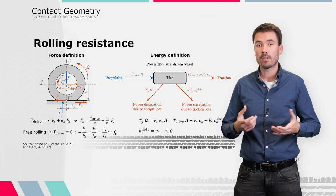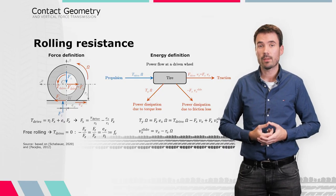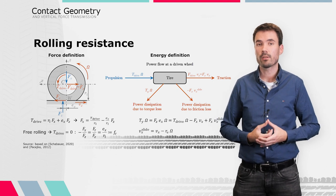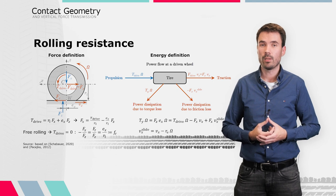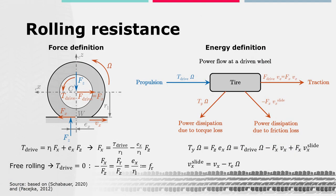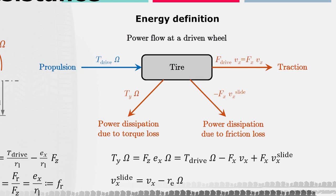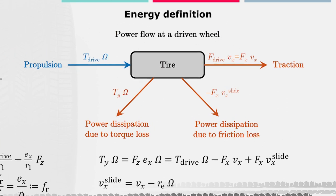With this simple consideration, we found a description of the resistance force, which is proportional to the rolling resistance coefficient and the vertical load, and counteracts the wheel motion. In contrast to the force definition, the energy definition is based on considering the total power flow and equilibrium at the driven wheel, as shown here on the right side for a longitudinal wheel motion.